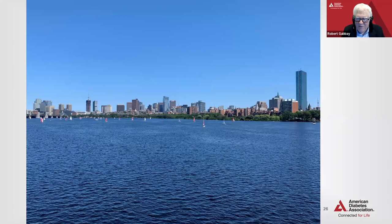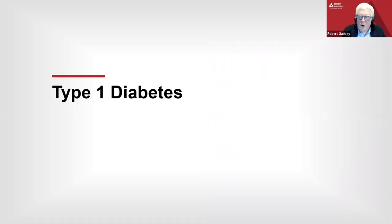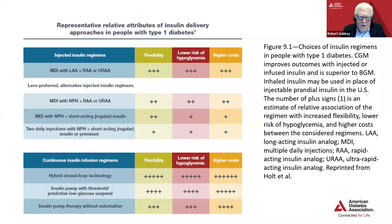We're at about the halfway point. We have some really important information to share about pharmacological treatment. Pharmacological treatment for glycemic control — we'll start with type 1 diabetes. This information is based on a recently published joint American Diabetes Association and EASD consensus report. In terms of insulin management, there are multiple different insulin management options, and once again, this is about personalizing it to the individual that we are caring for.